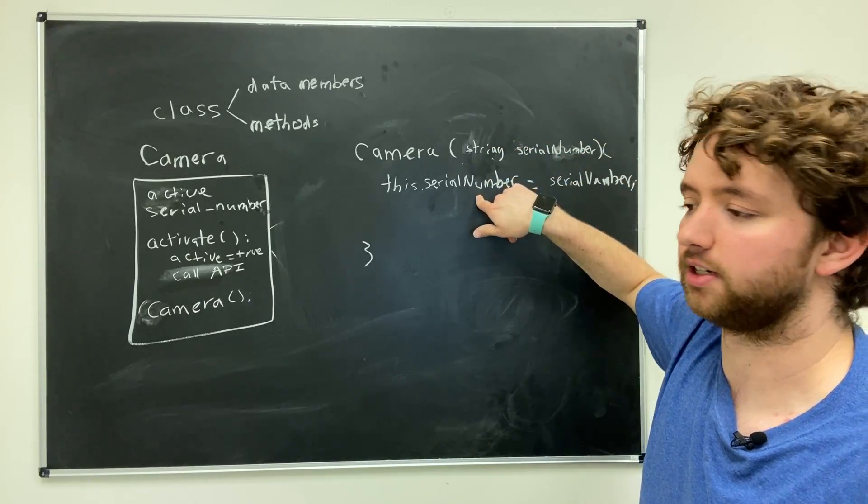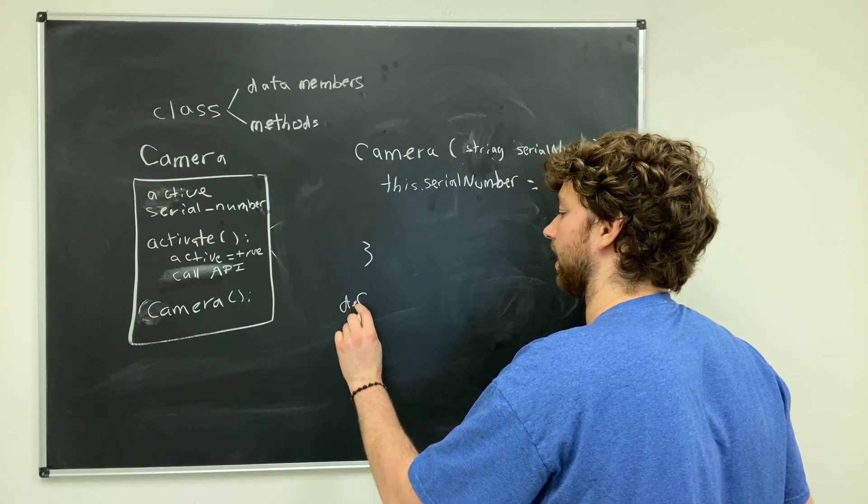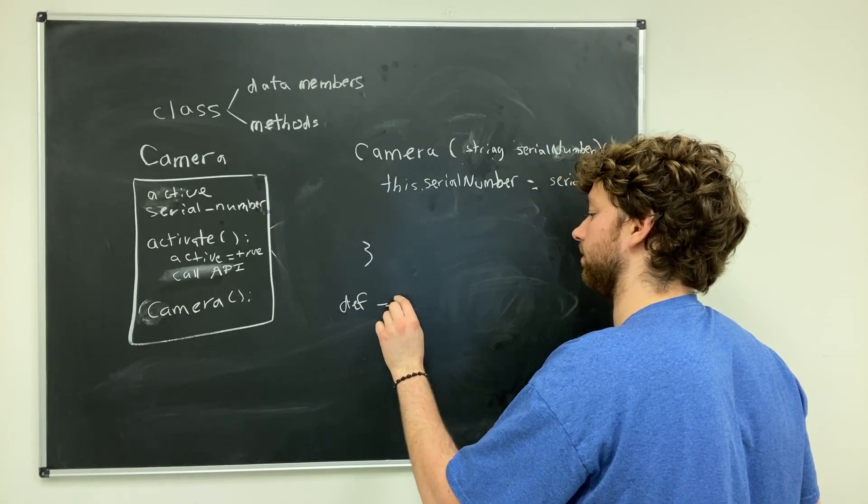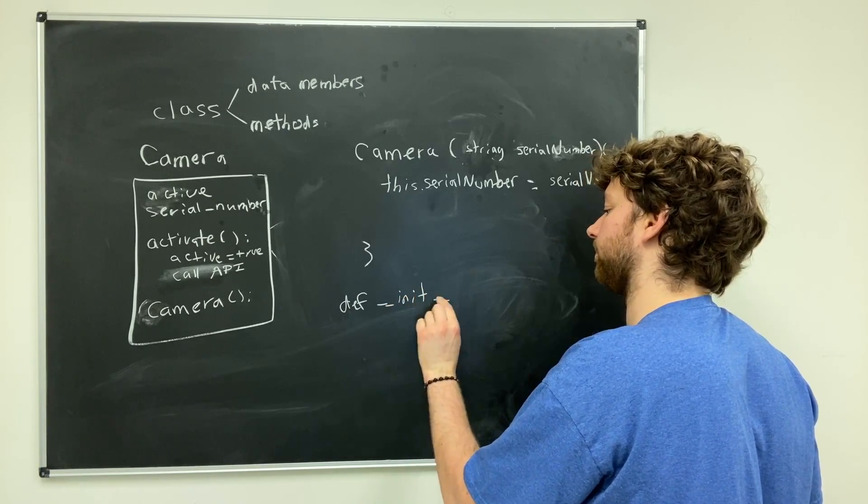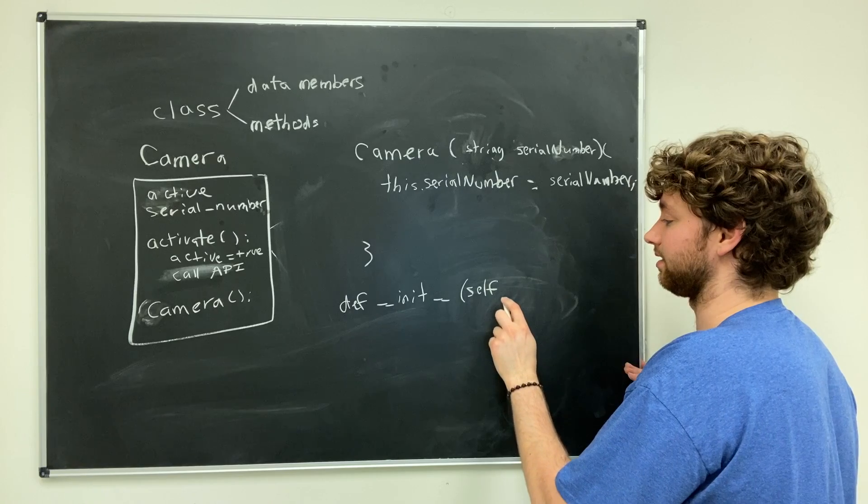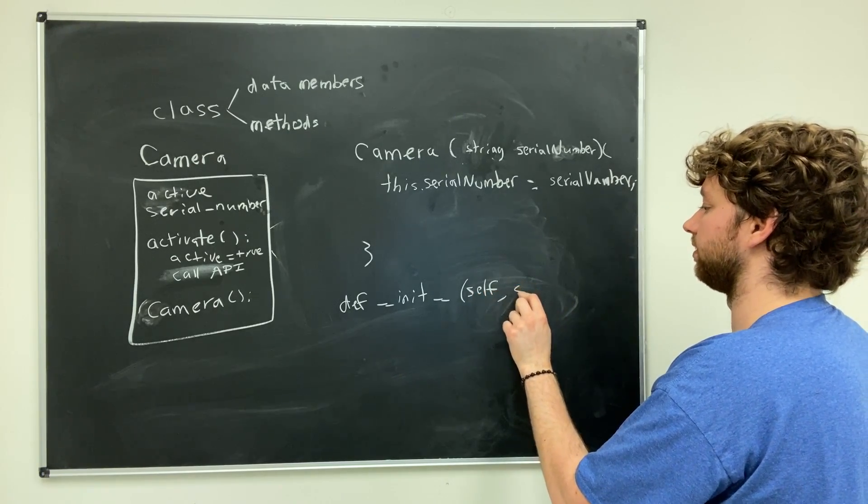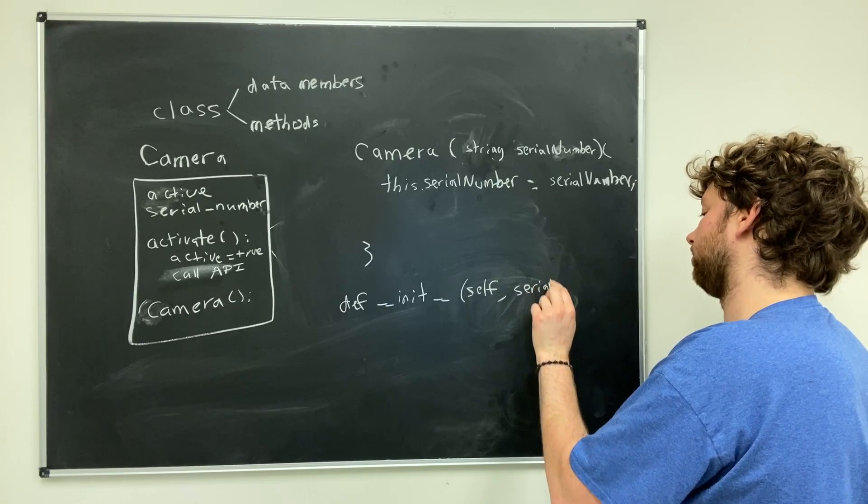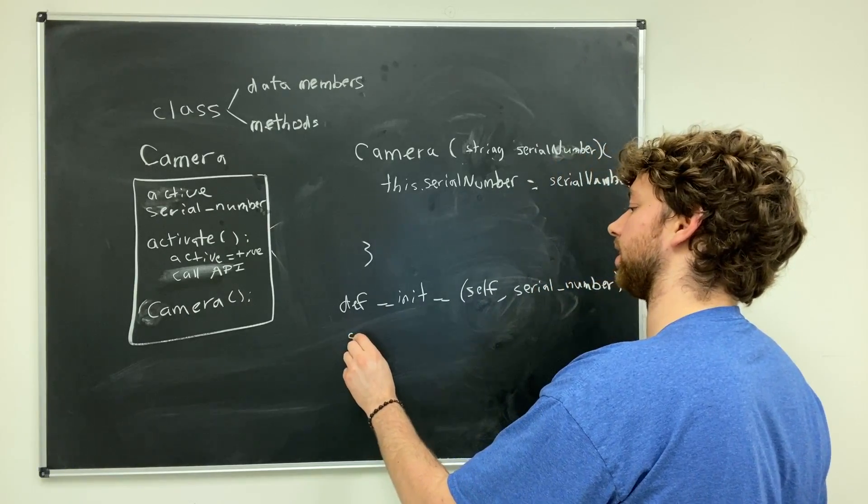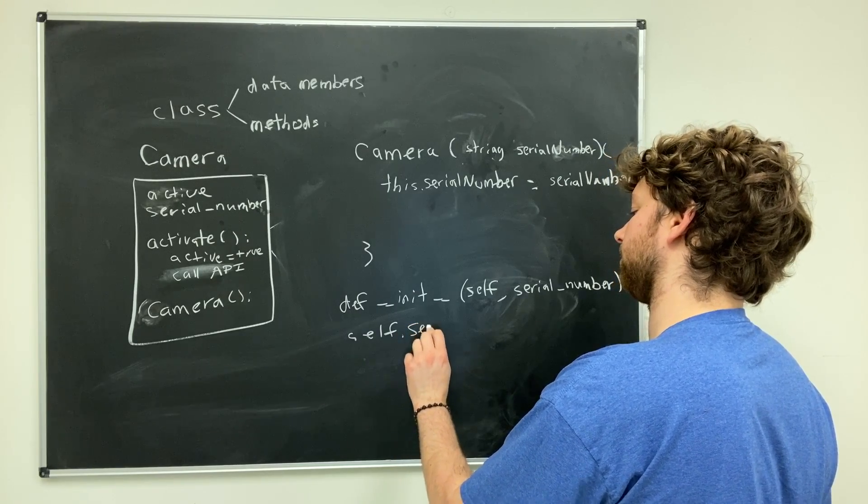For Python you would basically override __init__ and you would have to implicitly take self as an argument, but you'd also have a couple other parameters in here, specifically the serial number. Then in here instead of saying this, you would say self.serial_number equals serial_number.